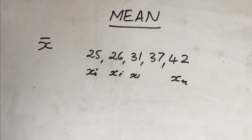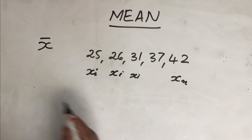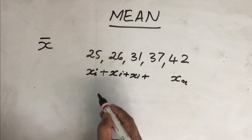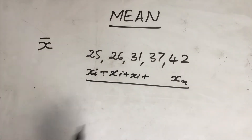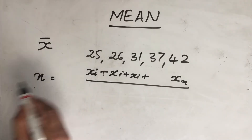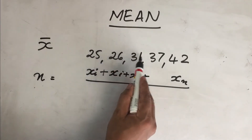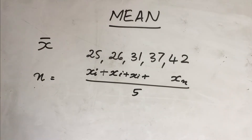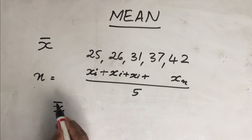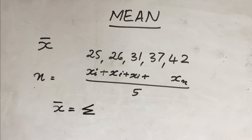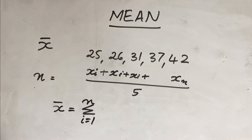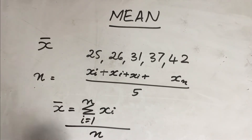This is an example of an ungrouped distribution. In order to find the mean, we will add x₁, x₂, x₃ up to xₙ, divided by the total number of observations, denoted as small n. For general purposes, the formula can be rewritten as: x-bar equals, using the Greek letter sigma to denote summation, the summation of all xᵢ values from i=1 to n, divided by the number of observations.